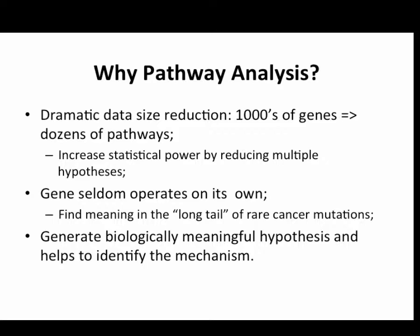The second reason is genes or proteins very rarely operate on their own. They always operate in groups, in pathways, in connections. So if one gene is mutated in one patient and its neighbor is mutated in the second patient, the outcome could be the same. That helps us to find the meaning of the long tail of rare cancer mutations.